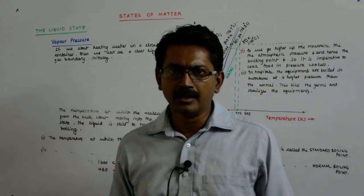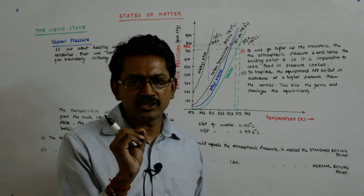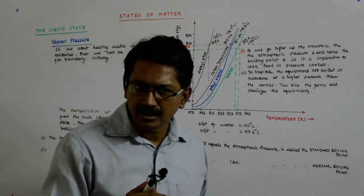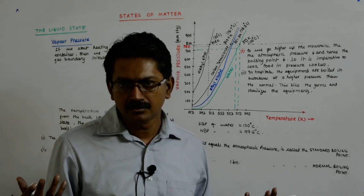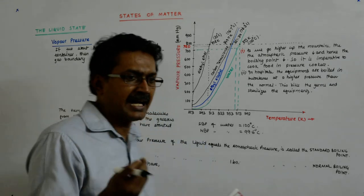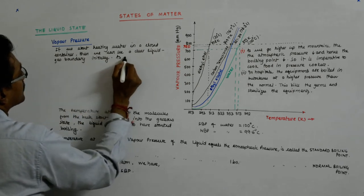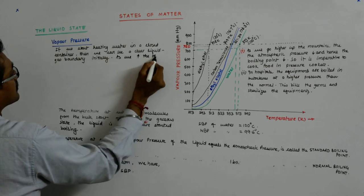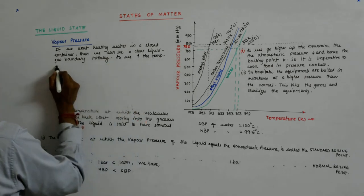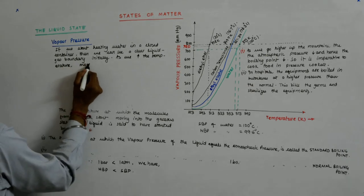Temperature comes at which there is simply no distinction between the liquid and the vapor phase. That temperature is called the critical temperature. As we increase the temperature more and more, liquid turns into vapor.